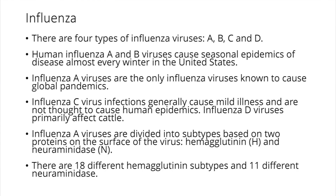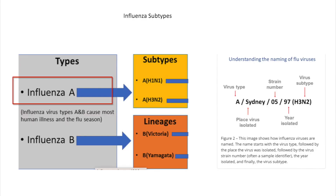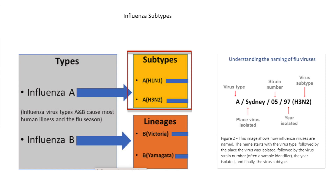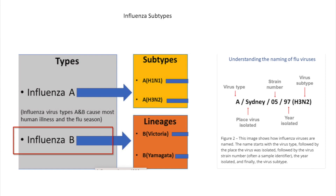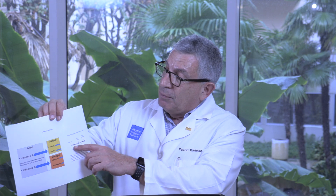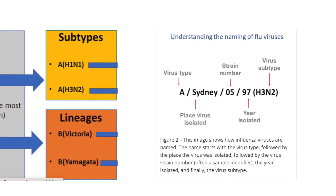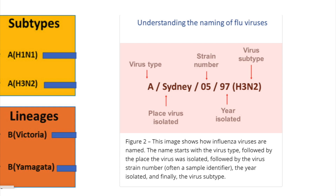There are 18 different hemagglutinin subtypes and 11 different neuraminidases. The biggest subtypes circulating now are H1N1 and H3N2. Influenza B is defined by where the viruses were isolated — Victoria or Yamagata. Scientists refer to these strains by the virus type, where it was located, the strain number, the year isolated, and then the virus subtype — that's how we characterize the viruses.